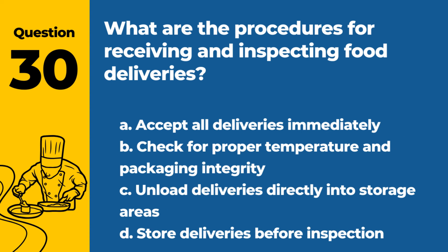Question 30. What are the procedures for receiving and inspecting food deliveries? a. Accept all deliveries immediately. b. Check for proper temperature and packaging integrity. c. Unload deliveries directly into storage areas. d. Store deliveries before inspection. Answer: b. Check for proper temperature and packaging integrity. This ensures the food received is safe and of good quality.